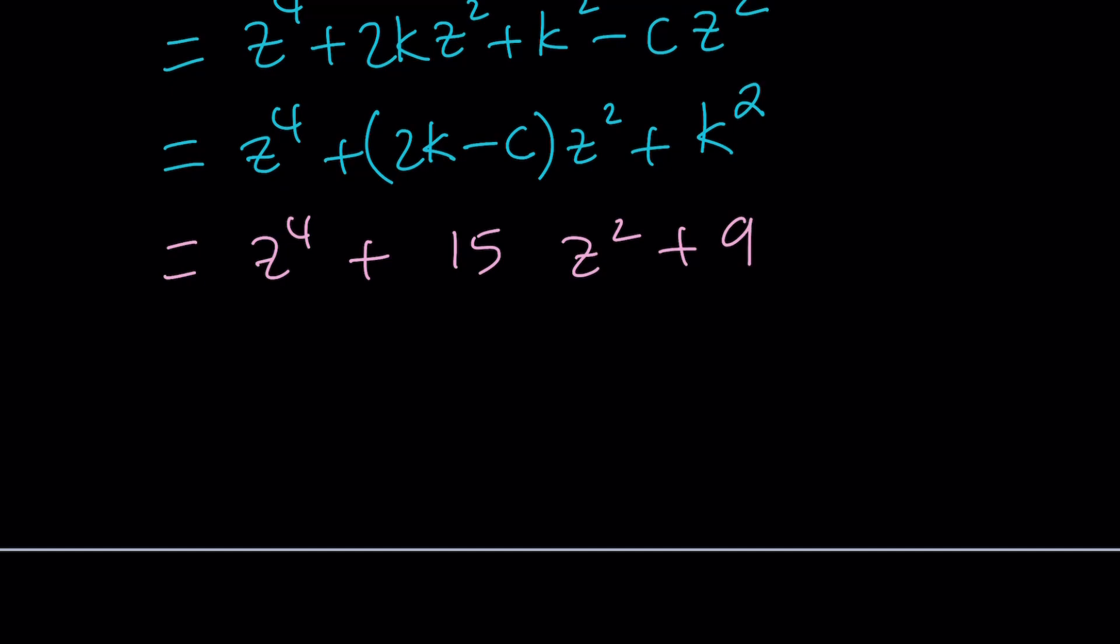Now notice that when you compare these two things, since this is true for z values, then we're going to have the following. This got to equal 15 and this has to equal 9. So that gives us a system of equations. So we have 2k minus c equals 15 and k squared equals 9. Obviously k squared equals 9 is going to give you two solutions, right?